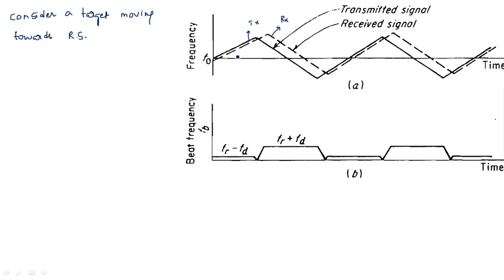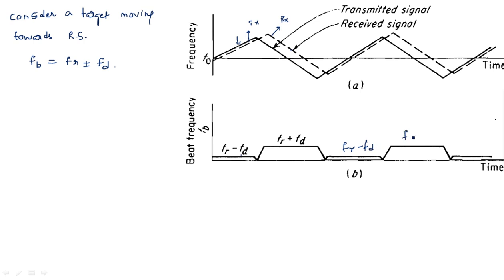The beat frequency is the difference between the transmitted and received signal frequencies: fb equals fr plus or minus fd. During the rising period of the triangular waveform, the frequency difference is narrow, corresponding to fr minus fd. During the falling period, the difference is larger, corresponding to fr plus fd.